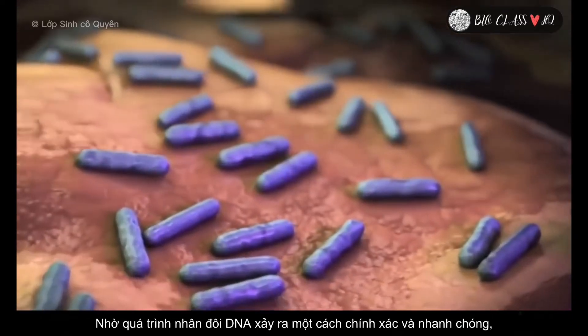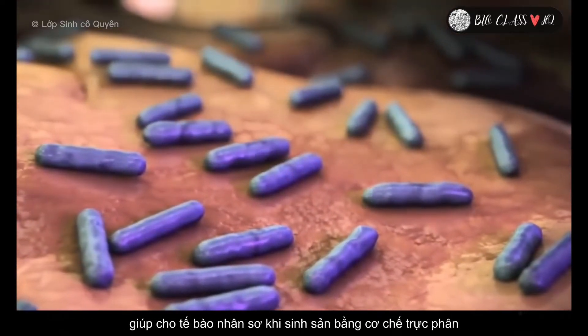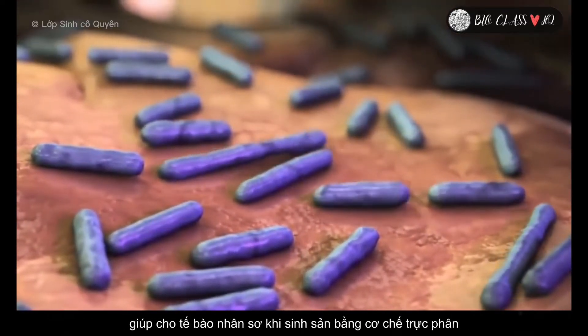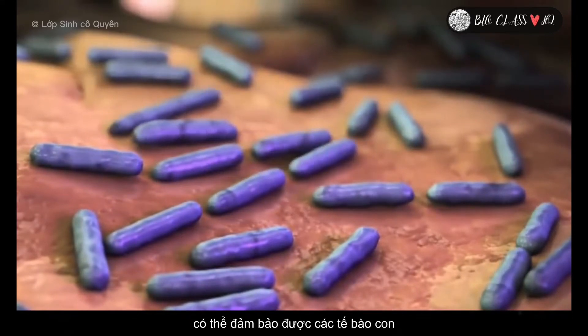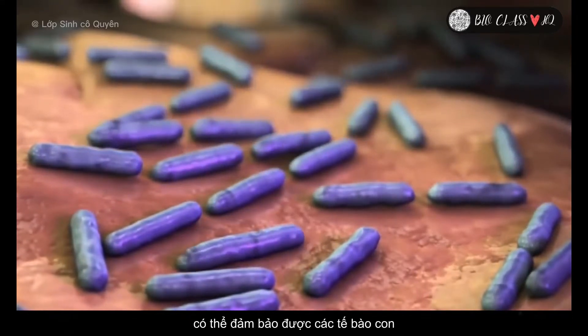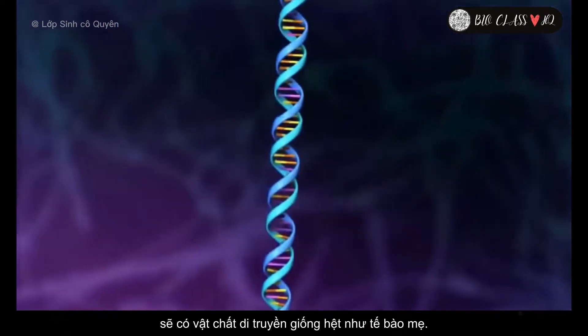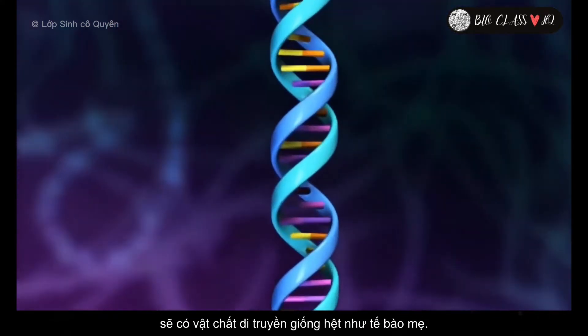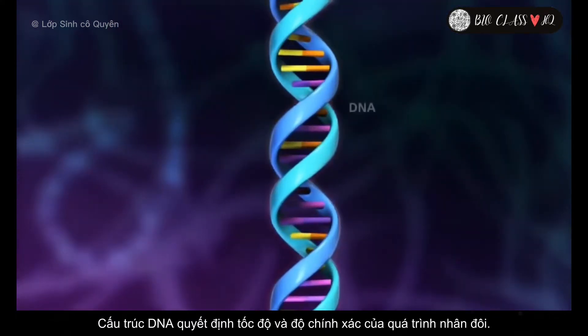Prokaryotic cells that reproduce by binary fission rely on the fast, accurate process of DNA replication to ensure future generations of cells will have the same genetic instructions as the parent cell. The structure of DNA aids in the speed and accuracy of replication.